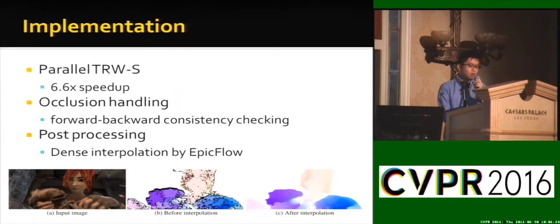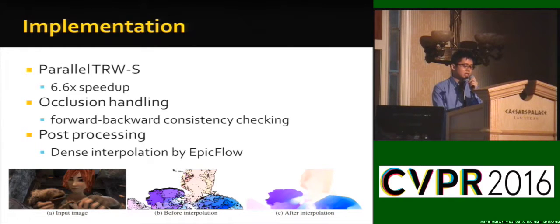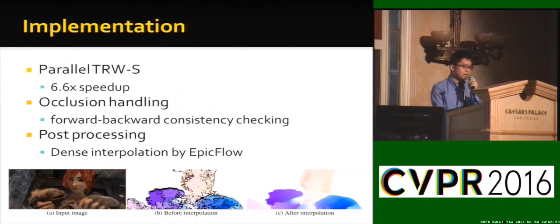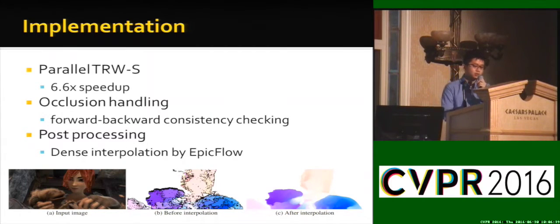To handle occlusion, we adopt forward-backward flow first, and then discard inconsistent matches using batch data to obtain subpixel resolution flow.